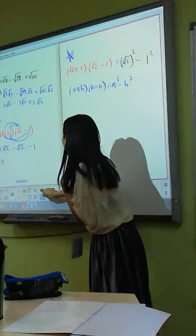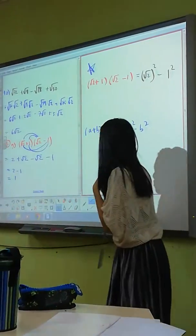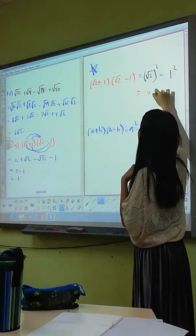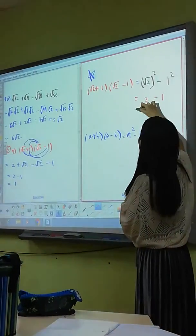So what is square of two? Two. One minus one squared is? One. So what do I get? One.